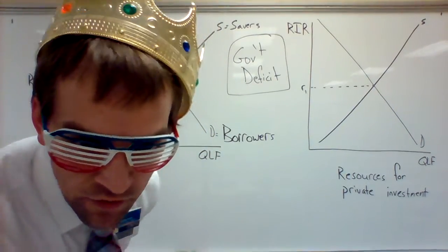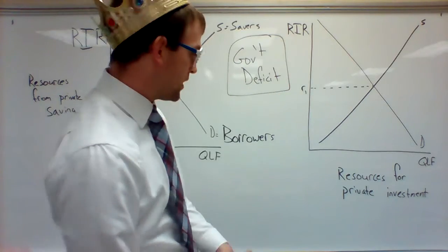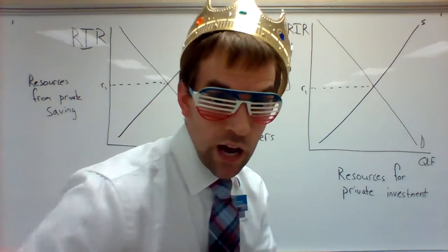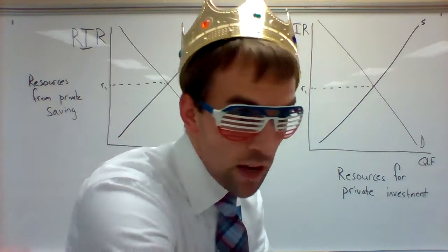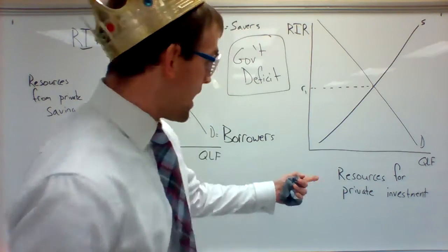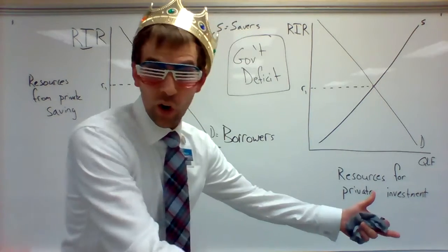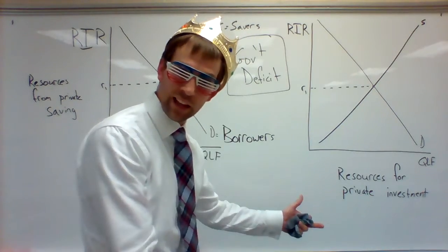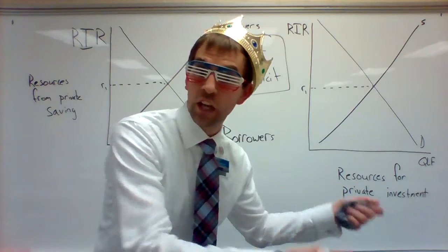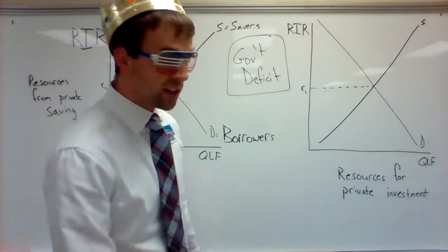There are two ways to look at this. If the resources in the loanable funds market are the resources for private investment — dollars that businesses might use to buy new capital goods, machinery, tools — then the government is going to have to borrow more money, taking dollars that could have been used for private investment to pay off their bills.